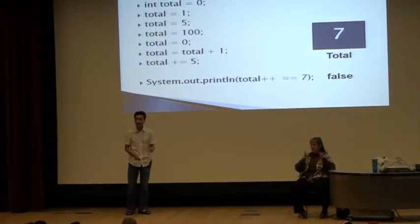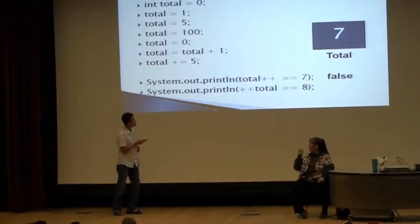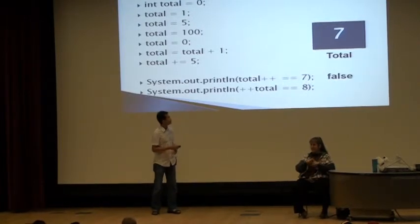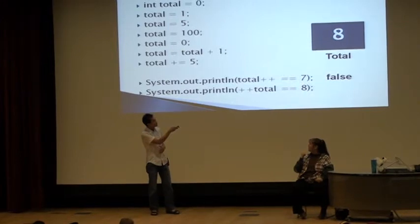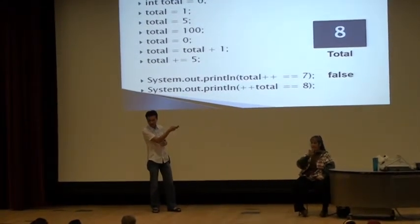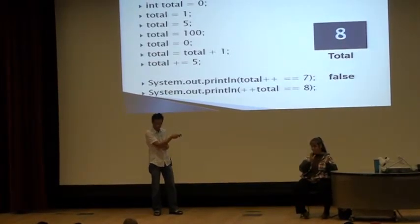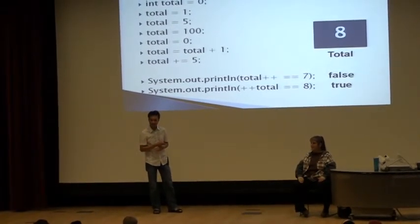And that's in contrast to the next way of doing it, which is plus plus total equals to eight. Then what happens is, the value of total, because it's a pre, went from seven to eight already. And then we take that whole thing and say eight equals to eight. And then that becomes true.